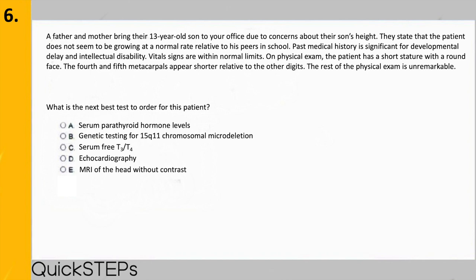Since we agree it's most likely Albright's hereditary osteodystrophy, let's think about the pathophysiology. Normally PTH causes the kidney to reabsorb calcium and excrete phosphate, increasing serum calcium and feeding back to normalize PTH. In pseudohypoparathyroidism, the PTH receptor in the kidney does not work — calcium spills into the urine and phosphate is retained. PTH will increase in response, but since it doesn't work on the kidney you still have decreased calcium and high phosphate. The serum studies look like low PTH effects with an elevated PTH level — so the answer is choice A: check serum parathyroid hormone levels.